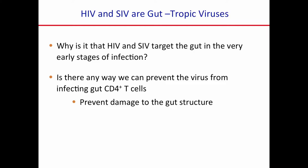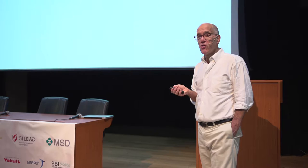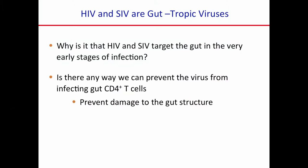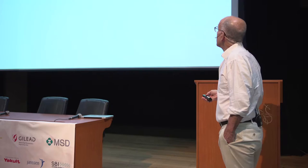The question that we started to ask a number of years ago is: why is it that HIV and SIV target the gut in the very early stages of infection? It really doesn't matter how you're infected or by which route — even in the context of IV drug use, the gut is the place where the virus initially homes to and replicates. And then the second question we asked is whether there's any way to prevent the virus from infecting these gut CD4-positive T cells and prevent this damage to the gut structure, because these are really the underlying basis of HIV disease.